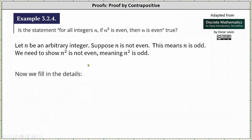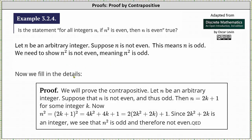Now let's fill in the details. Proof: We will prove the contrapositive. Let n be an arbitrary integer. Suppose n is not even, and thus odd. Then n = 2k + 1 for some integer k.